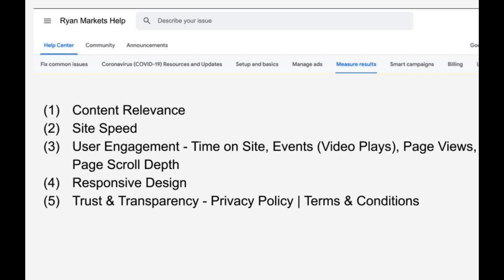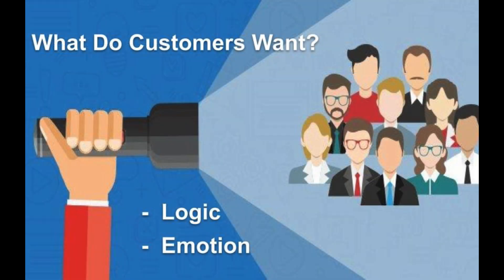Four is responsive design, so your landing page looks good on a mobile device. And five is trust and transparency — specifically, this means having a privacy policy and terms and conditions linked on the landing page. So this all being said, what do the customers of your clients or your business want? What your customers want and what Google wants are actually quite similar. Your customers want valuable information about the services they're inquiring about — that's the logical side — and they also want information about your business, which creates trust, the emotional side. In the next section I'll show you how to systematically discover what those aspects are.